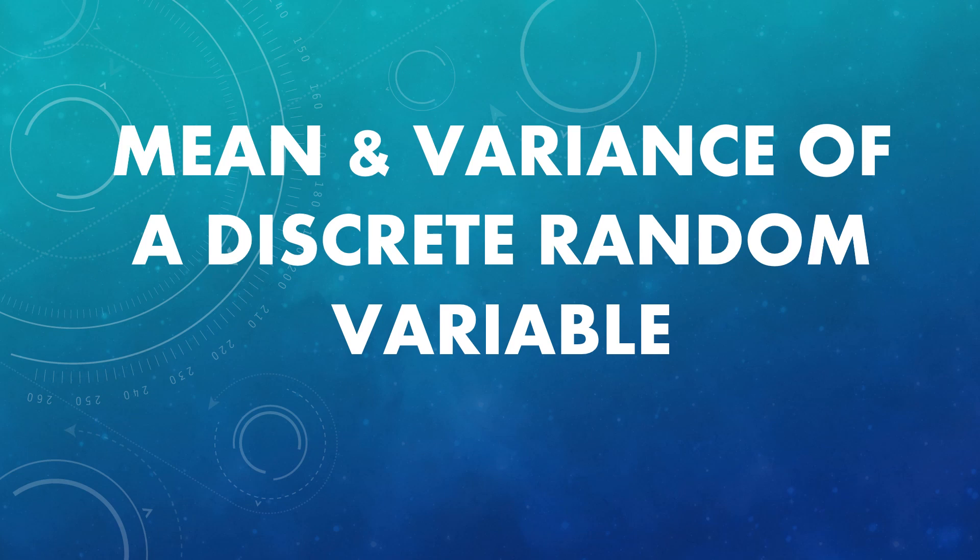Last meeting, we discussed about discrete probability distribution wherein you learned how to distinguish a discrete from a continuous random variable. You also learned how to construct values of a random variable, and how to construct a discrete probability distribution and a probability mass function. Those learnings will be vital for today's session because you will be applying them to find the mean, variance, and standard deviation of a discrete random variable.